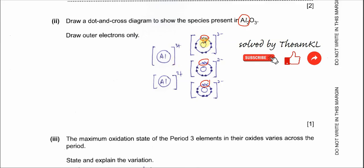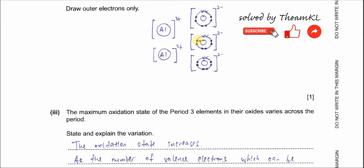Once you complete that, remember to put the charges: aluminum is 3+ each and oxygen (as oxide) is 2− each. This completes the full dot-and-cross diagram for aluminum oxide.